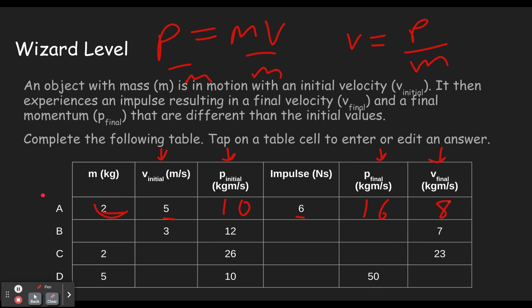Next problem. We see we have an initial velocity of 3, an initial momentum of 12. So if we're solving for mass, we haven't done that yet. So if we want to solve for mass here, then we're going to need to get rid of the velocity.